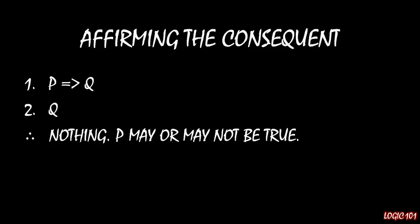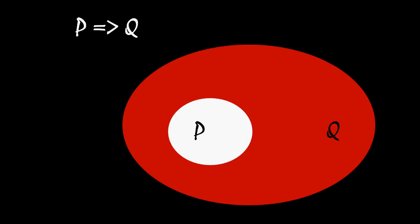p may or may not be true, and I can prove this to you with a very simple picture. This is our visualization of modus ponens: p implies q. Notice that p is entirely inside of q, so if you're inside of p, you're definitely inside of q.